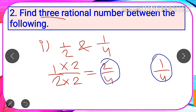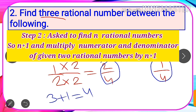Now we need to find three rational numbers between 2 by 4 and 1 by 4. Since we are asked to find three rational numbers, we do three plus one equals four. This method works as follows: if we are asked to find five, we do five plus one equals six; if six, then six plus one equals seven. This method is best when the number of rational numbers to be found is less than 10.